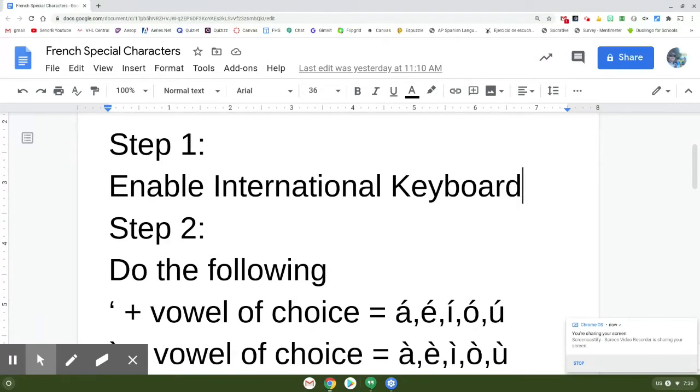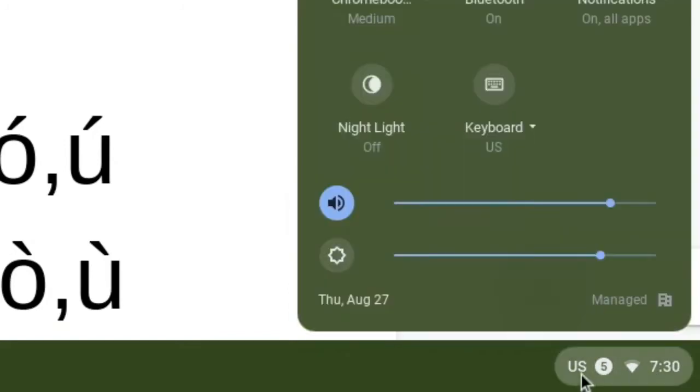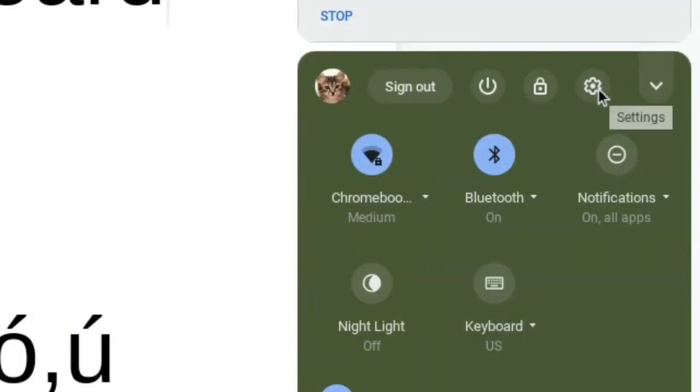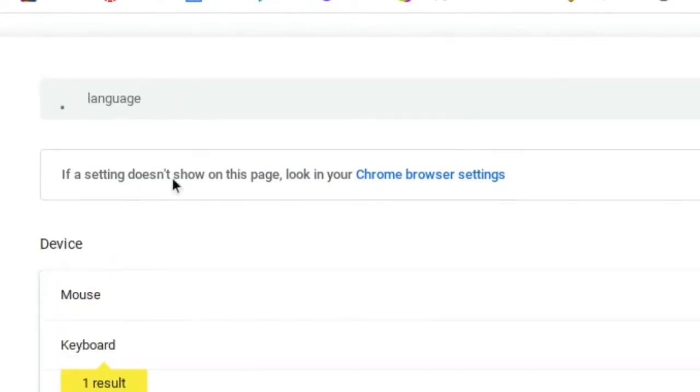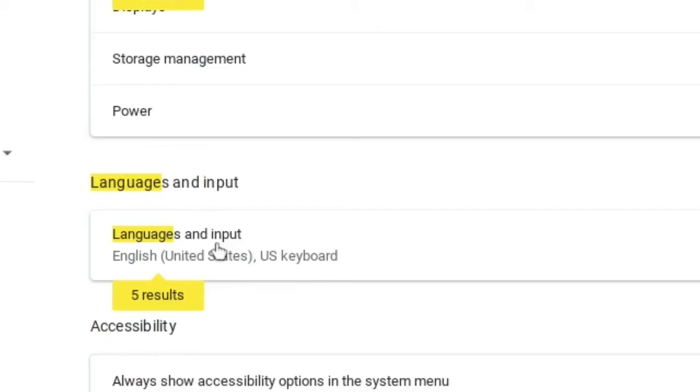First thing you want to do is enable the international keyboard. So down here at the bottom right, where you have the time and stuff like that, we're going to click down there and we'll go into settings, search language, and I'll click on languages and input.